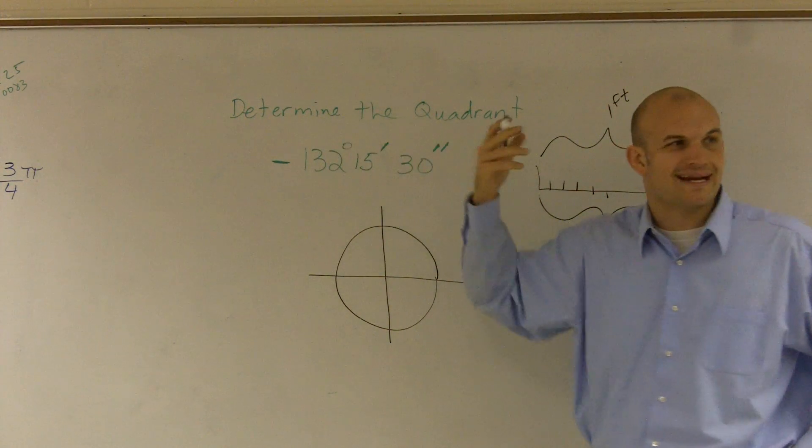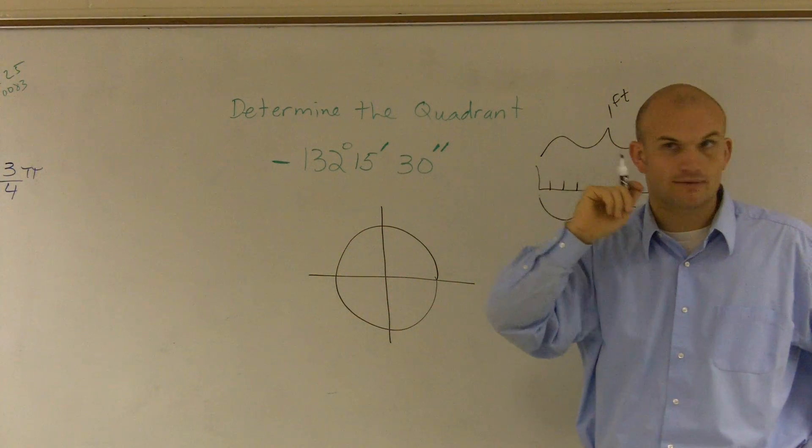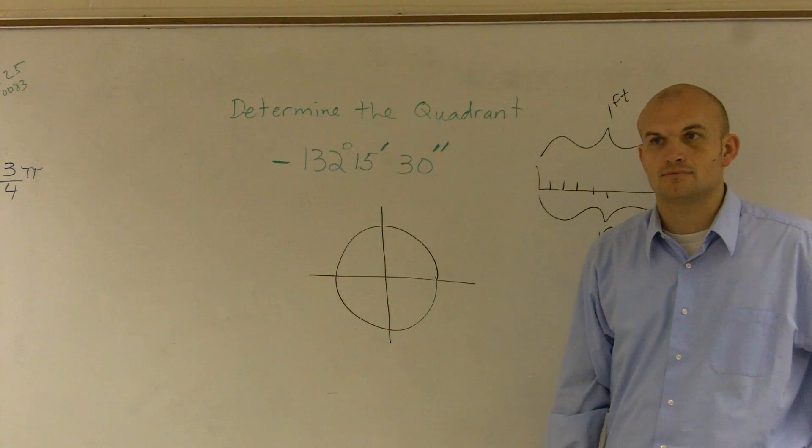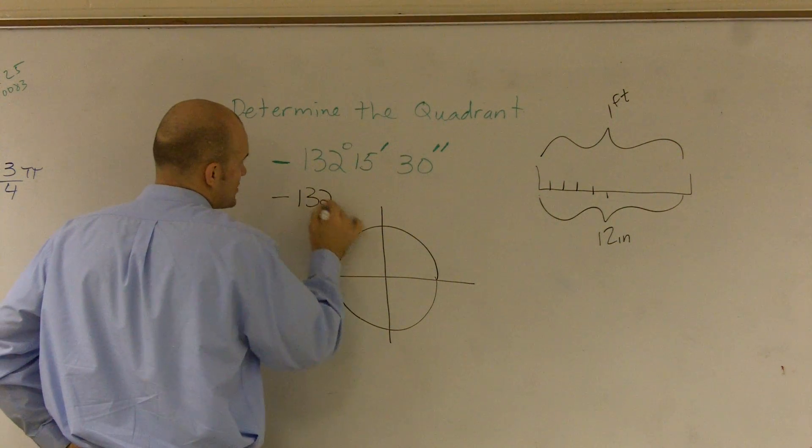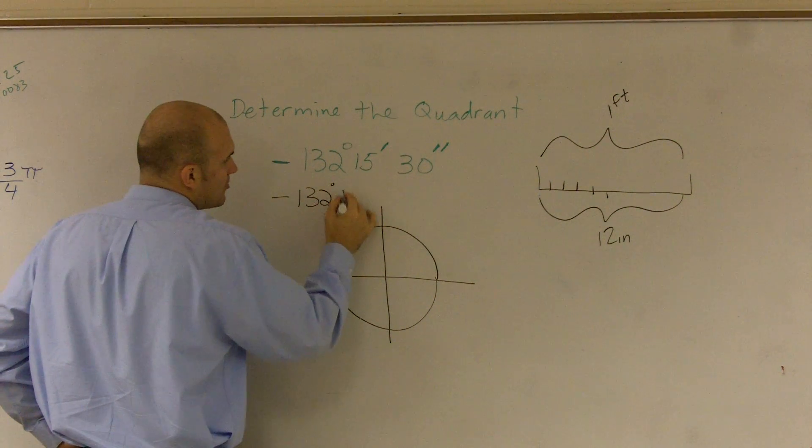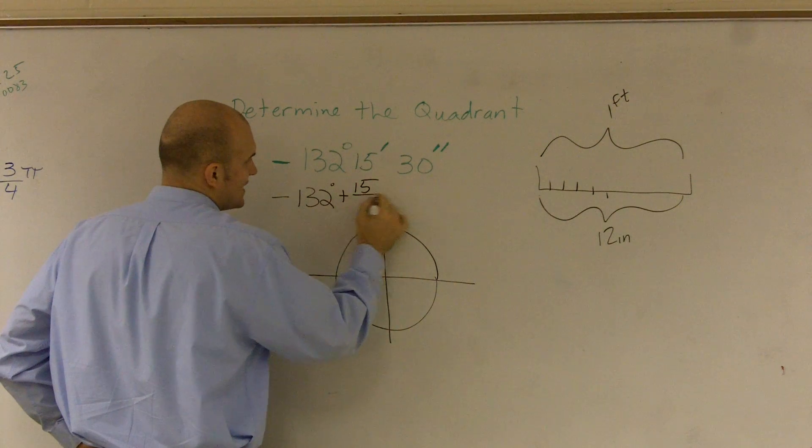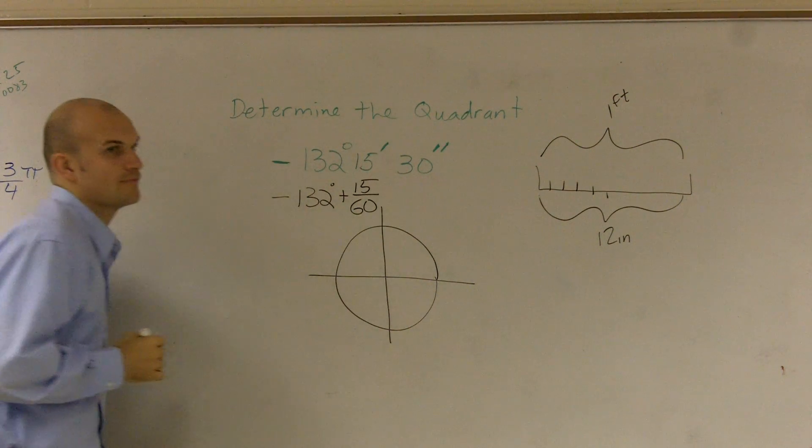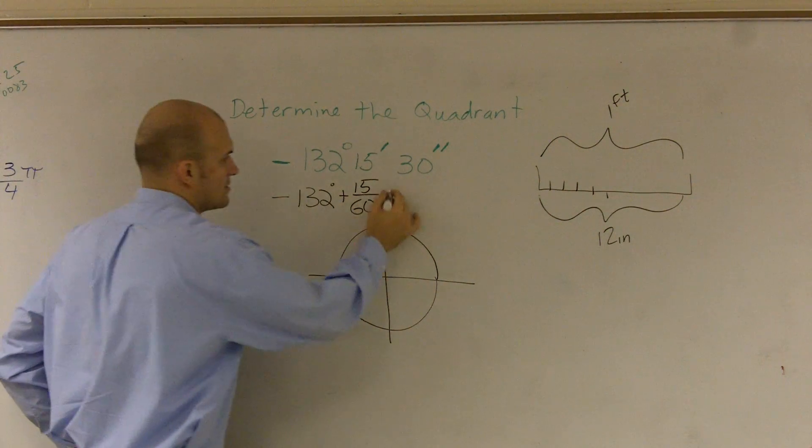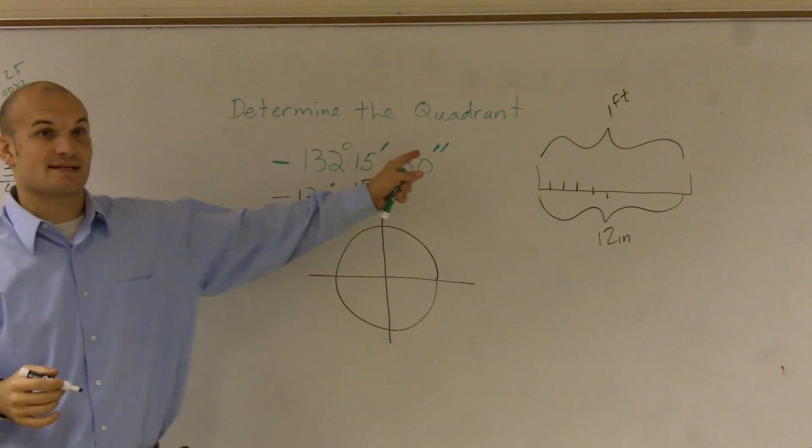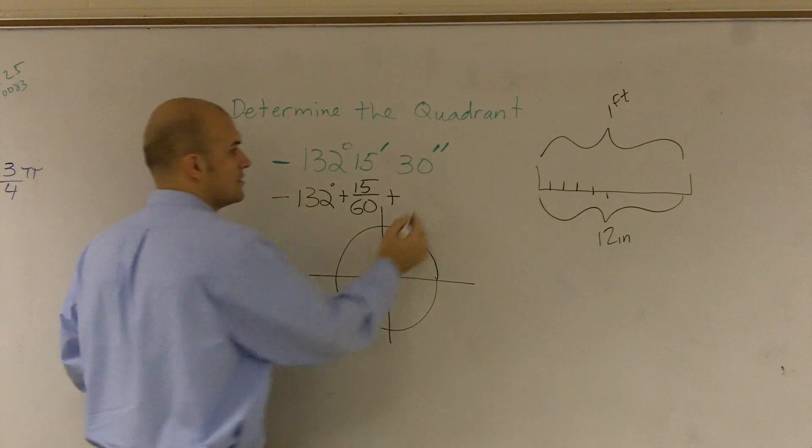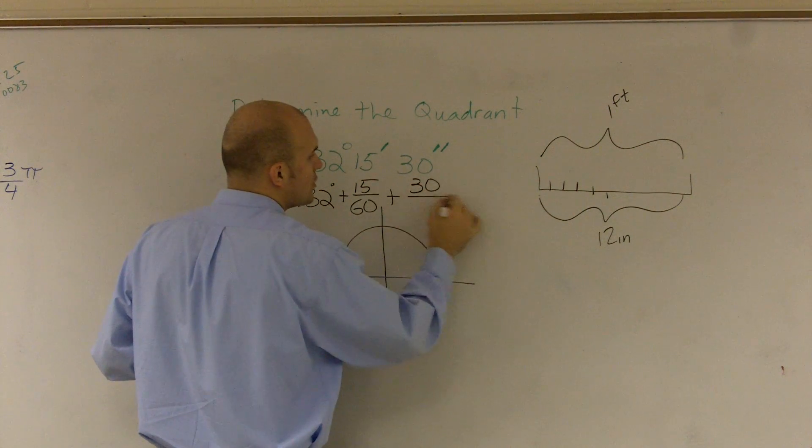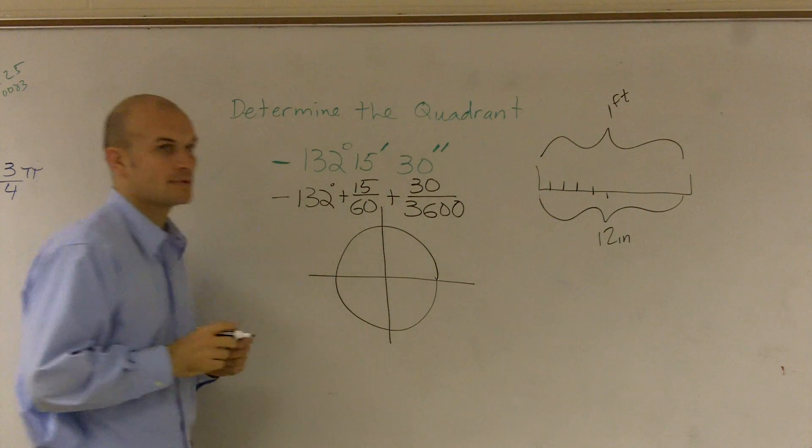Think about your degree like an hour. How many minutes are in one hour? 60. So I'll write negative 132 degrees plus 15 minutes out of 60. Plus, this is seconds. How many seconds are in an hour? 3,600. So plus 30 over 3,600.